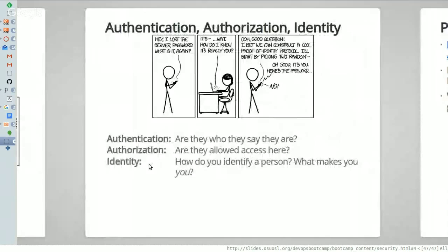To go along with that, there are a couple of things we need to know about what we are keeping secure. We have the idea of authentication, which is: are you who you say you are? That person doesn't necessarily have to be a human — it can be something like Google.com. When I type Google.com into my browser, am I certain I'm going to Google.com and not to somebody's malicious site that's going to try to look at my cookies or automatically download something?